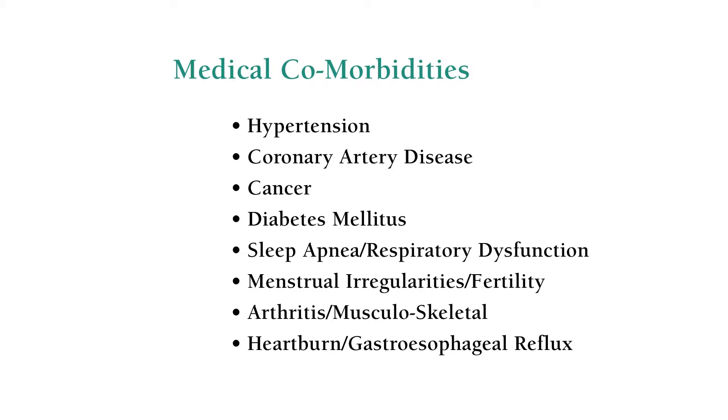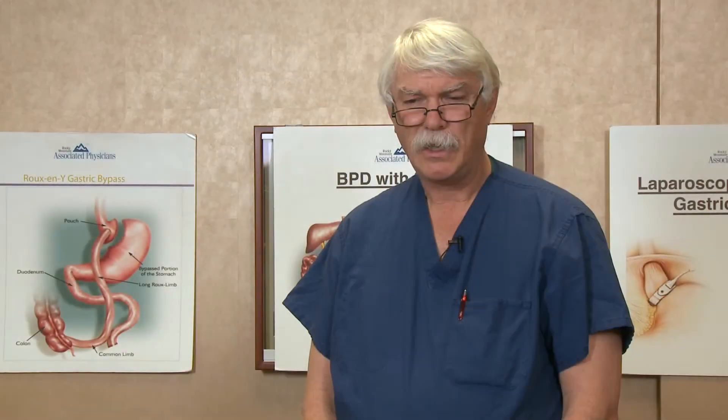These are medical comorbidities, but there are other comorbidities that are important and often not discussed. Things like physical comorbidities such as clothing selection — you can't go out to any store and just buy clothing. The selection is often limited, often more expensive, and a much more difficult situation.